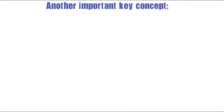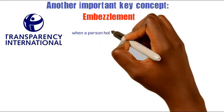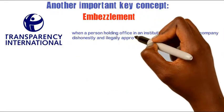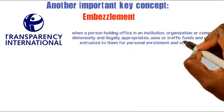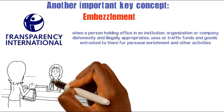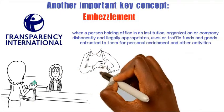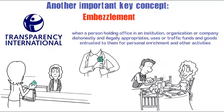Another important key concept is embezzlement. Transparency International defines embezzlement as when a person holding office in an institution, organization or company dishonestly and illegally appropriates, uses or traffics funds and goods entrusted to them for personal enrichment and other activities. For example, a cashier in a bank receives cash deposits from clients, secretly puts some cash in her bag, and uses that money to pay for lunch and order an Uber home. Her actions are classified as embezzlement, which is a corrupt act.